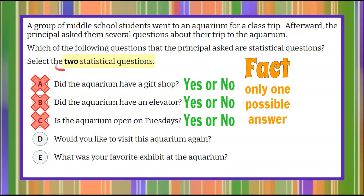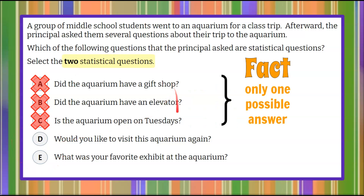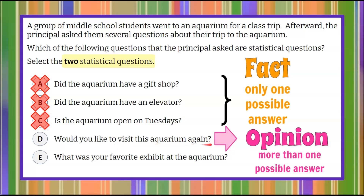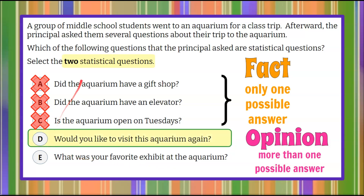That leaves us picking two statistical questions from the two remaining choices. I stand firm that A, B, and C are fact. So D: Would you like to visit this aquarium again? This is an opinion. Even though it's a yes or no, more than one answer is valid. Depending on who you are and whether you enjoyed visiting, you may or may not want to return. So we're going to choose D as one of our statistical questions because we'll have varied answers.